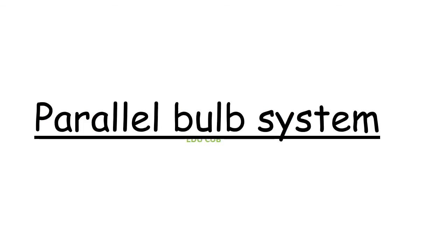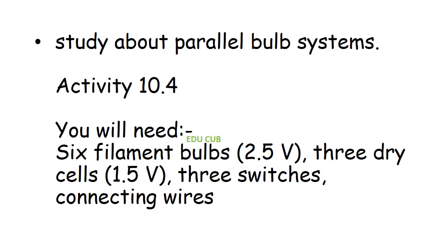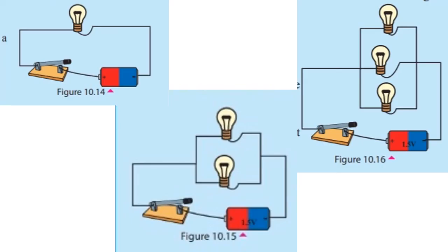Next is the parallel bulb system. In the fourth activity, you have to study about the parallel bulb system. You will need six filament bulbs, three dry cells, three switches, and connecting wires. First, connect one bulb to the cell and the switch as shown in the figure. Next, connect two parallel-connected bulbs to a switch and cells as shown in the figure. Now switch on all three circuits at the same time and observe the brightness of the bulbs.